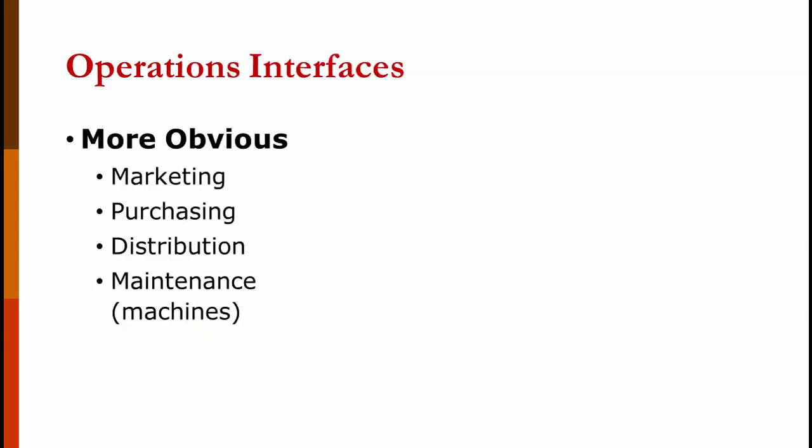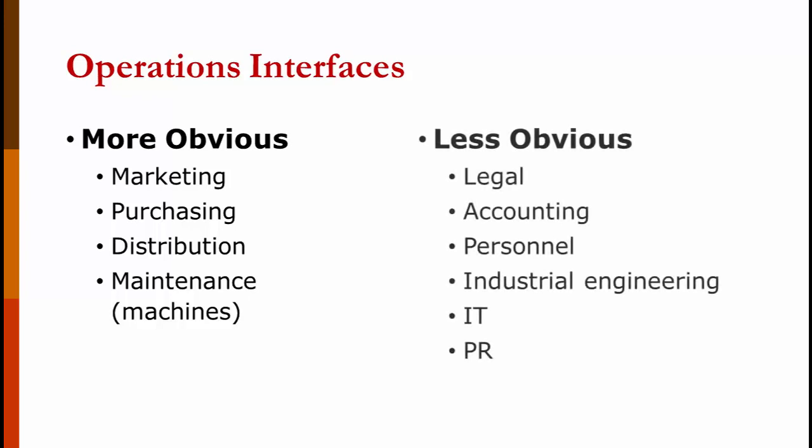Operations interfaces with many other areas in the company. The more obvious ones are marketing, purchasing — for an American manufacturing firm, 60% of cost of goods sold is purchased material, handled by the purchasing department — distribution, and maintenance (meaning maintaining the machines, not just cleaning). The less obvious interfaces include legal, accounting, personnel, industrial engineering, the computer department, and public relations.